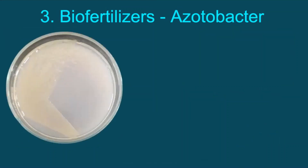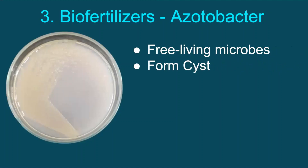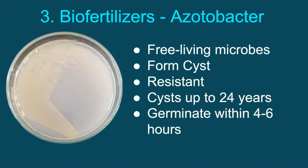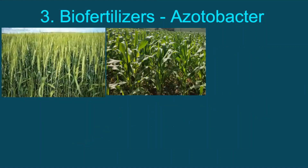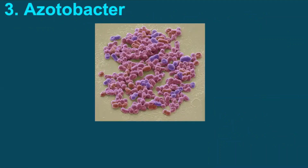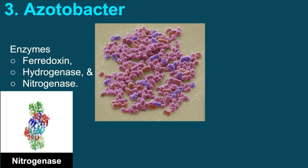The next biofertilizer is azotobacter, a free-living aerobic microbe. Azotobacter forms cysts during resting periods and is therefore more resistant to adverse conditions. In dry soils, azotobacter can survive in the form of cysts for up to 24 years and become functional within 4–6 hours once soil conditions are favorable. Therefore, farmers may apply lower doses of azotobacter over a period of time. Azotobacter can be used with a variety of crops like wheat, maize, cotton, potato, vegetables, and all other fruits and vegetable crops. It is a versatile, multi-benefit species with a full range of enzymes needed for nitrogen fixation: ferredoxin, hydrogenase, and the important enzyme nitrogenase.